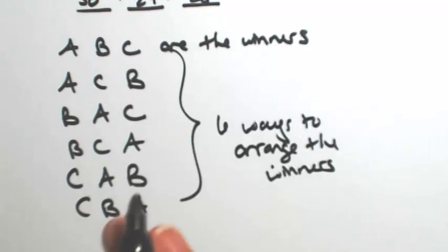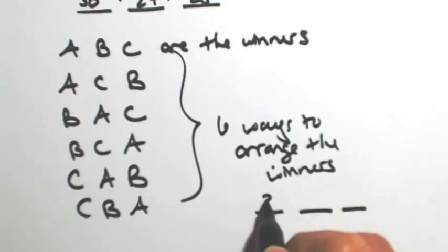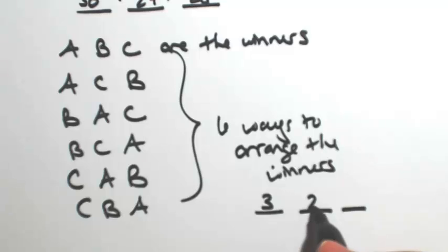Another way we could have figured that out without having to go through all the possibilities is if you have three winners, then for the first one you have three ways to pick that person, two for the next one, one for the last one. Multiply these together so there's six ways to arrange the winners.